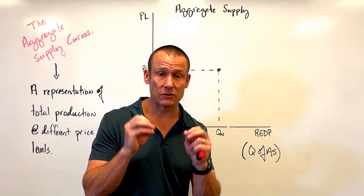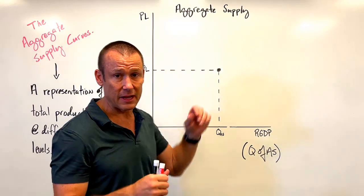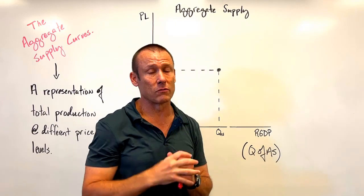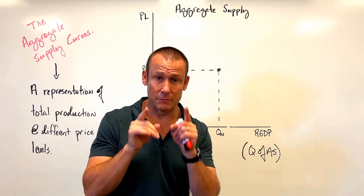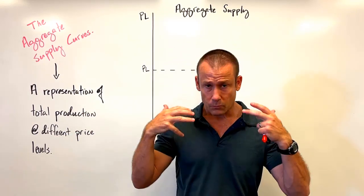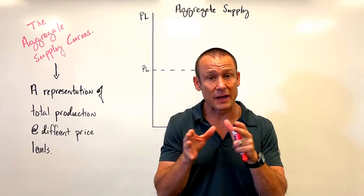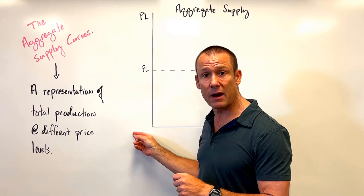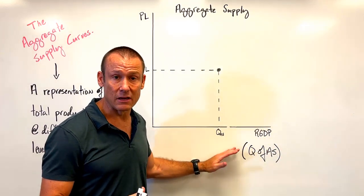Aggregate supply is represented by an entire line, not a single dot. That line is the short-run aggregate supply curve, and there's also the long-run aggregate supply curve. The aggregate supply curve represents a relationship between how the price level affects how much we are producing — the quantity of aggregate supply.